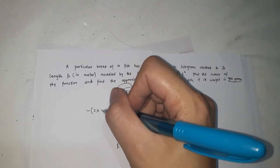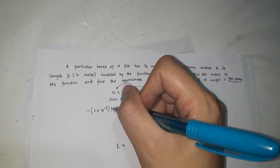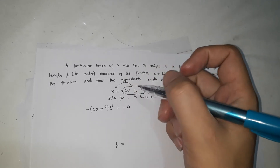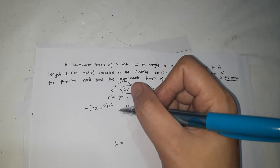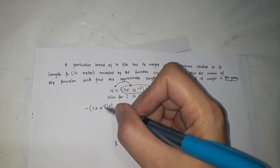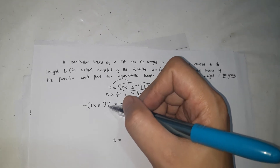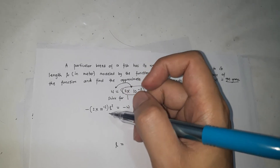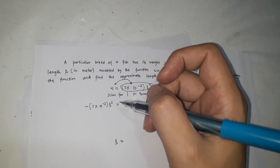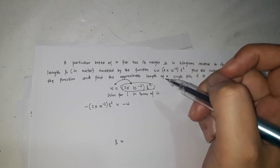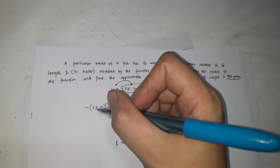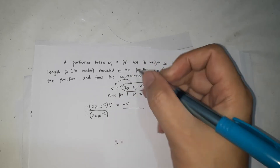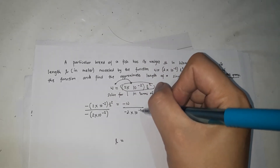After transposing, we have −2 × 10^(−2) × l² = −w. Since there's no addition or subtraction here, we can't simply transpose; instead, we use the multiplication property of equality — that is, we divide both sides by −2 × 10^(−2). Whatever is beside l², divide both sides by that.